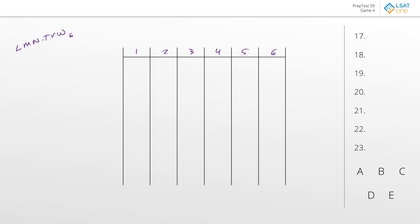The first rule says that L has to go at some point after T, so T must come before L. Next, we are told that V has to go immediately next to W, so V and W have to be consecutive, but they could still go either way.